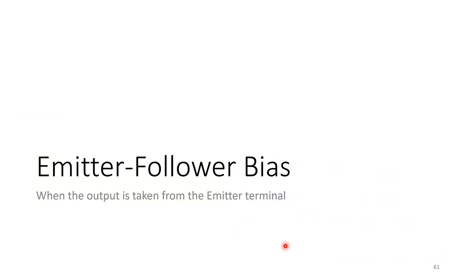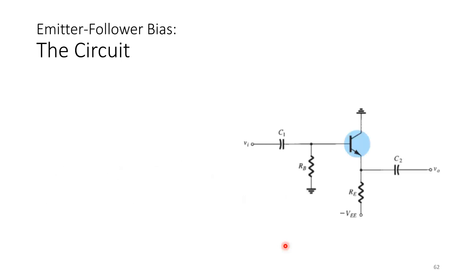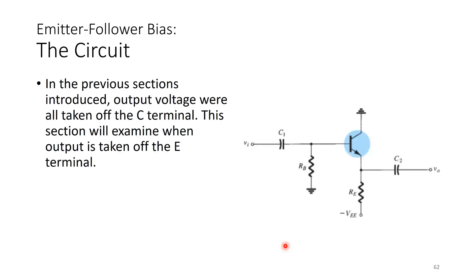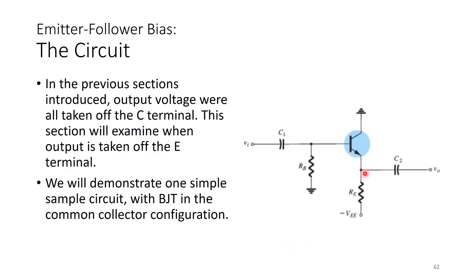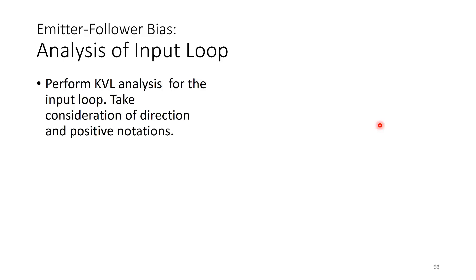Now, emitter follower bias — the second configuration. The output is taken from the emitter terminal, giving it the name emitter follower. This circuit is in a common collector configuration where the collector is connected to ground. In the previous configurations, output voltages were taken from the collector terminal; here the output is taken from the emitter terminal. The approach is still the same: analysis of the input loop, then analysis of the output loop.